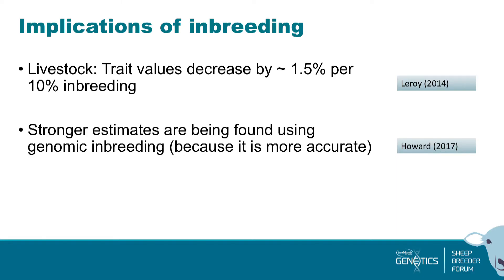That was just one illustration of what can happen. More relevant studies in livestock — the Leroy paper — have summarised that trait values decrease by about 1.5% per 10% of inbreeding. More recent studies using genomic estimates of inbreeding are finding stronger results because you're getting more accurate estimates of inbreeding.